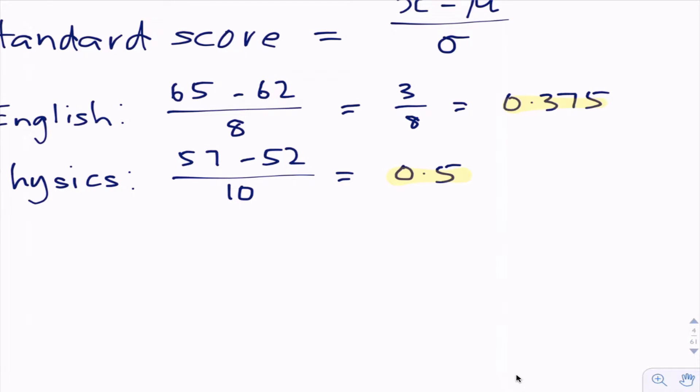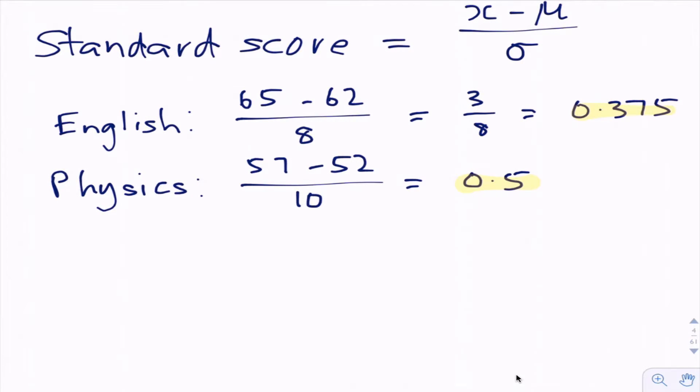In which test did he do better? In physics, he actually did better because he was half a standard deviation above the mean, whereas in English he was only 0.375 of a standard deviation above the mean. Comparing the scores this way, we can see that compared to his classmates he actually did better in physics in this case.